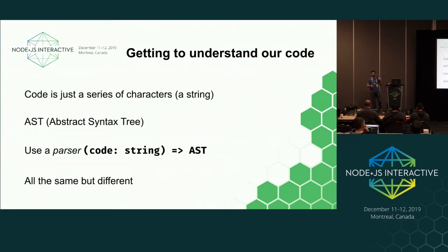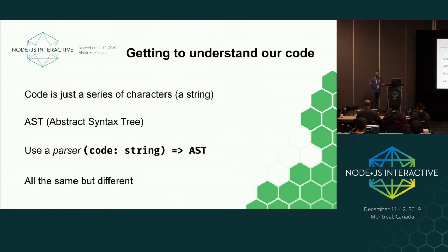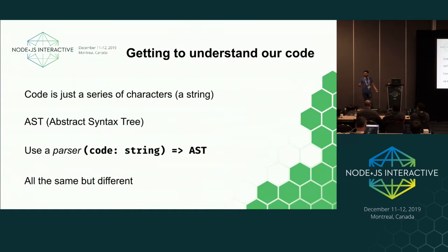So, ASTs. So far our code is just a bunch of characters — a string the computer can't really reason about. There is a data structure called a syntax tree, or abstract syntax tree. To produce an AST we use a parser. Who uses a parser every day? Who uses Babel? Who uses Webpack? Underneath, Webpack and Babel use a parser to make sense of your code. There are many flavors of ASTs — they're all the same but a bit different, like cousins speaking the same language with different words.